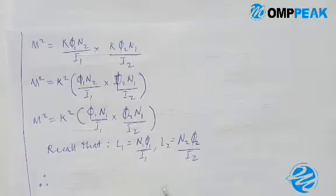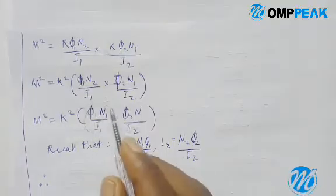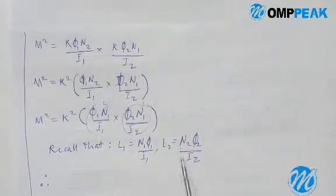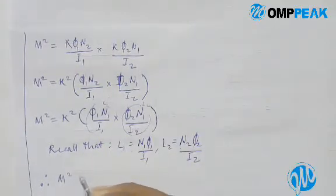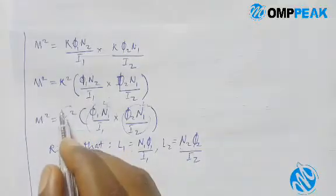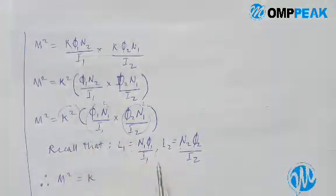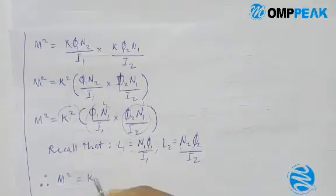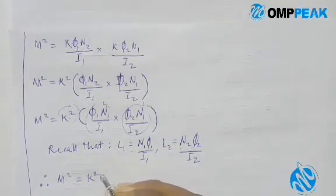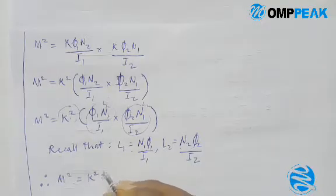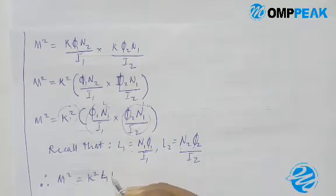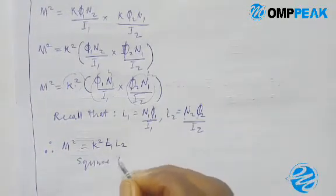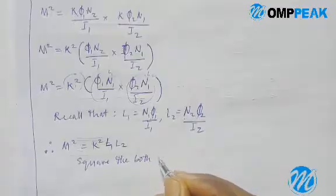Therefore, this one is L1 and this one is L2, as you can see. So M squared equals k squared·L1·L2. We've turned all this into L1 and L2, so we have M squared equal to k squared times L1·L2. Now let's take the square root of both sides.